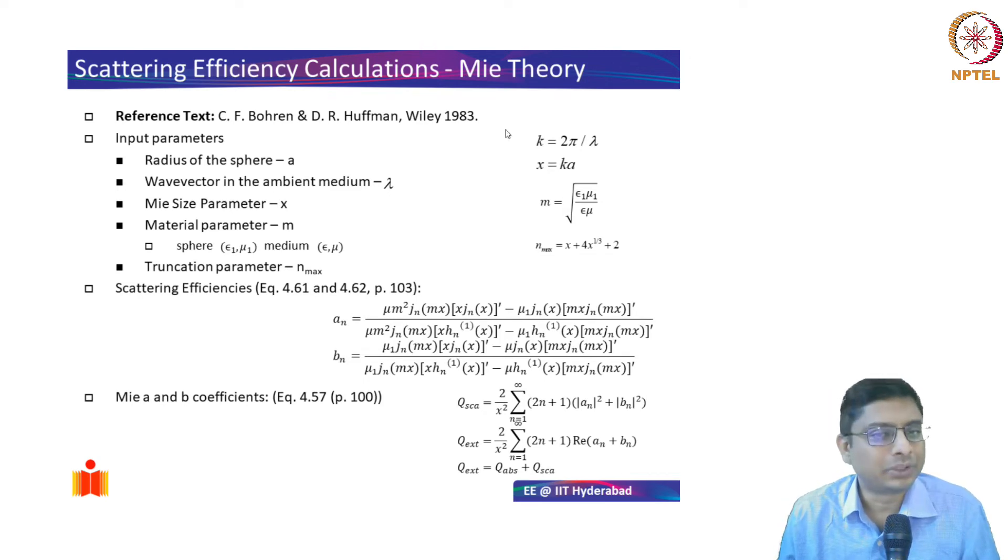This is a summary of it. When you try to calculate the scattering efficiency, you should read this book's fourth chapter for more details. Essentially you have various input parameters like the radius of the sphere, the wavelength at which you want to calculate the cross section, based on that and the refractive index of the medium and surroundings.